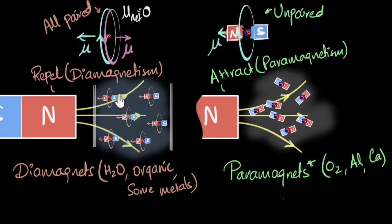Both phenomena are weak and temporary, and that's where ferromagnetism is different. With ferromagnetism, you can retain the magnetism even after you remove the external magnet. It's so interesting it deserves a video of its own.